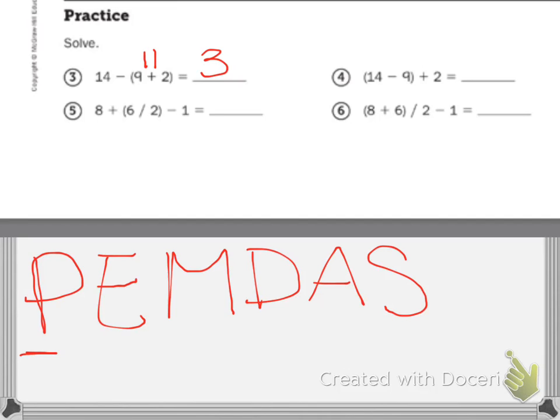Now let's look at number six. I have parentheses again. So parentheses eight plus six is fourteen. I don't have any exponents, I'm not multiplying, but I am dividing. So fourteen divided by two is seven. I'm not adding, but I am subtracting. Minus one is six.